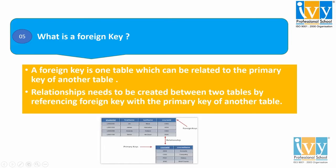Here we can see an example. In this example, there are two columns: course ID and course name, where course ID is the primary key. And this course ID is the foreign key in another table that has four columns: student ID, first name, last name, and course ID. That means the one which is primary key in one table becomes the foreign key in another table.